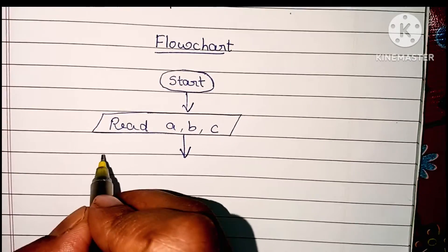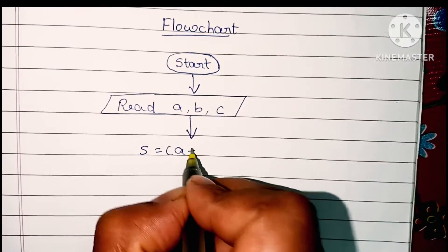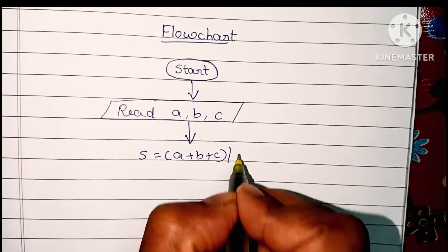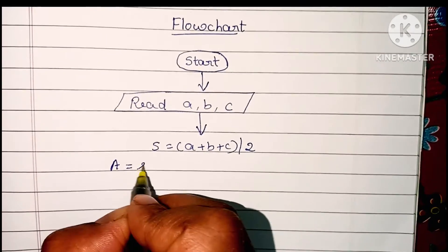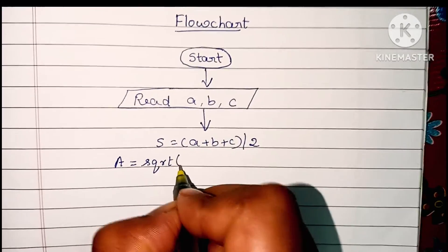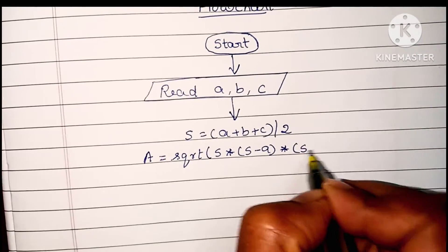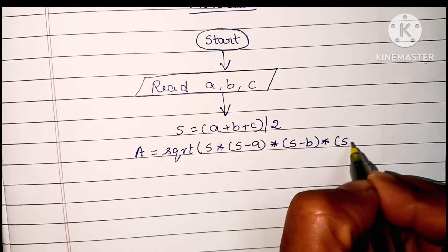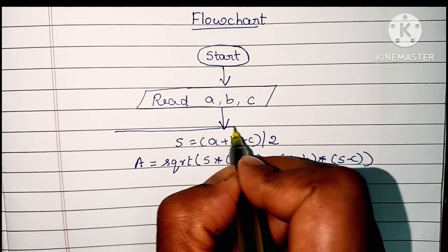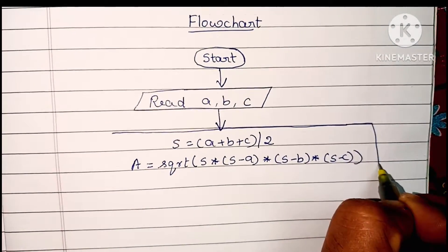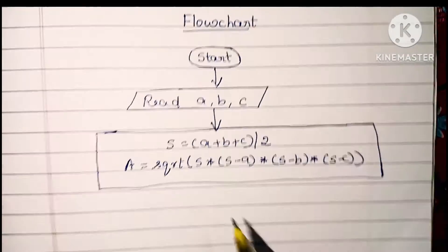Next we have to start the calculation. First we have to find the semi-perimeter of the triangle: s equals a plus b plus c divided by two. Next we have to find the area of the triangle: A equals square root of s into (s minus a) into (s minus b) into (s minus c). This is the formula to find the area of a triangle. Calculations are always written within a rectangular shape.